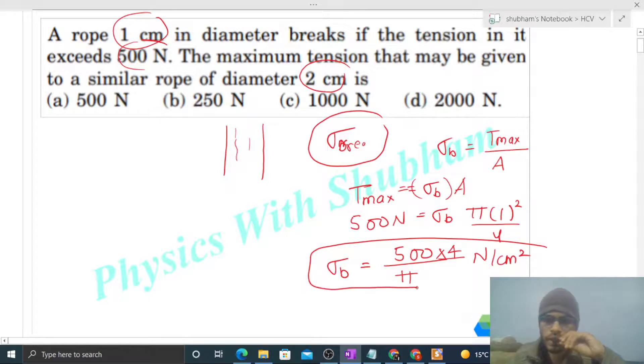Now in the second case, the diameter of the rope is given as 2 centimeter and we need to find maximum tension. Maximum tension will be breaking stress times cross-sectional area. The breaking stress value can be taken from the previous calculation...